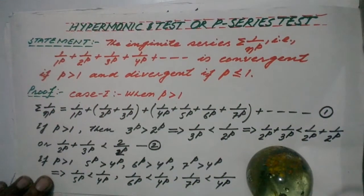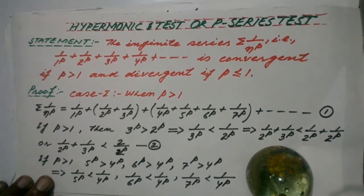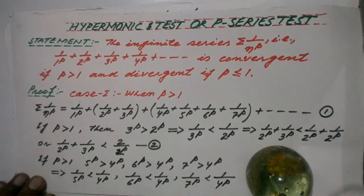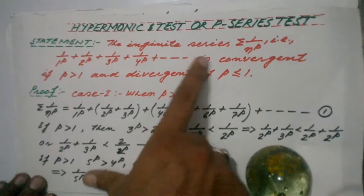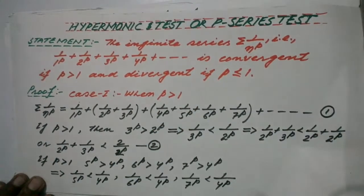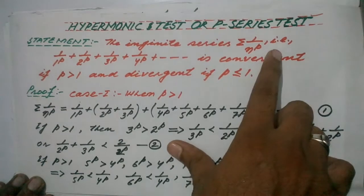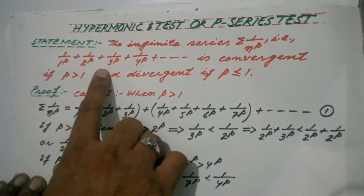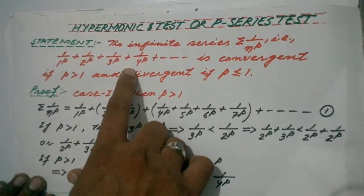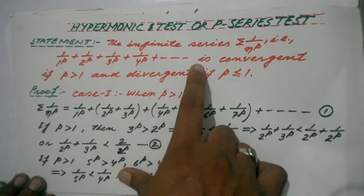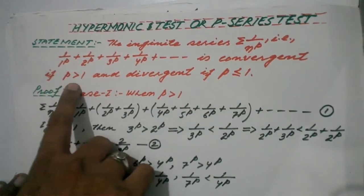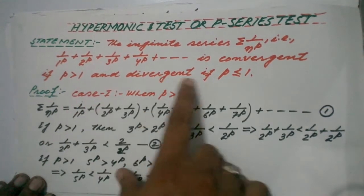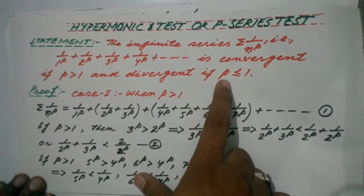In this video I am going to explain the hyperharmonic test, which is also known as the p-series test. The statement of the test is: the infinite series sigma 1 upon n raised to the power p — that is 1/1^p + 1/2^p + 1/3^p + 1/4^p + ... to infinity — is convergent if p is greater than 1, and divergent if p is less than or equal to 1.